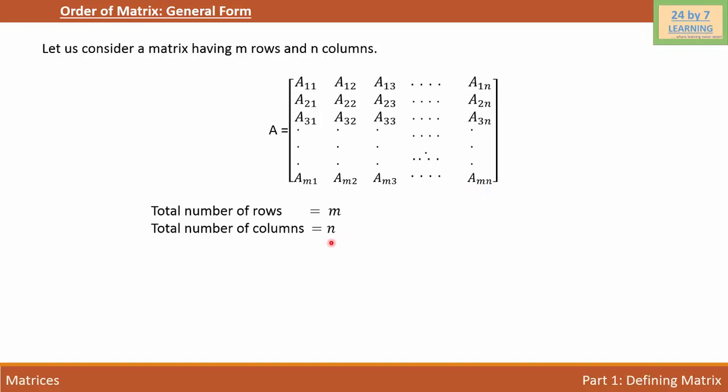As we know, the order of the matrix is number of rows by number of columns. So the order of this matrix is M by N.